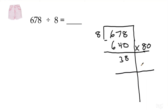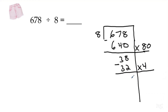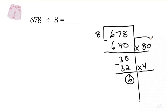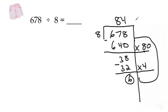I skip a line, draw a line, put my times. I know that I can do 4 groups of 8, and 8 times 4 would be 32. I subtract, I get 6 left. I know that 8 is bigger than 6, so I can't take any groups of 8 away from 6. And so I add up all my groups on the side, and my answer is 84 remainder 6.